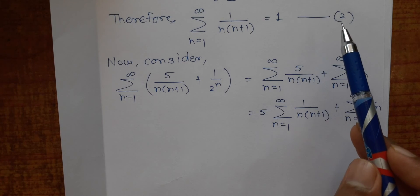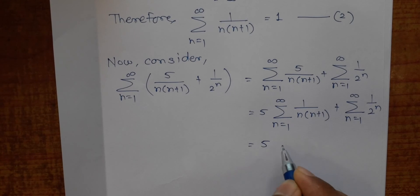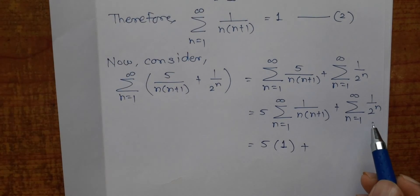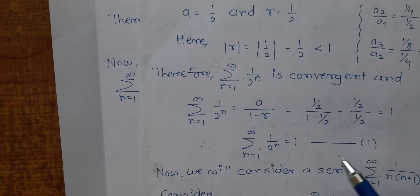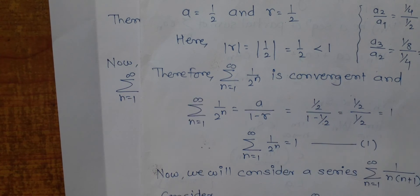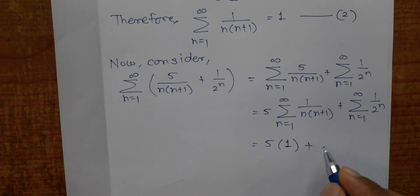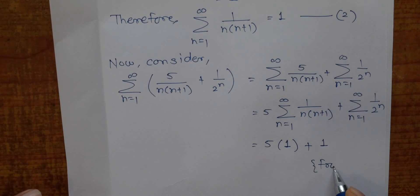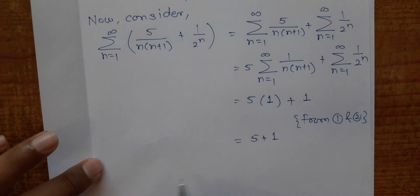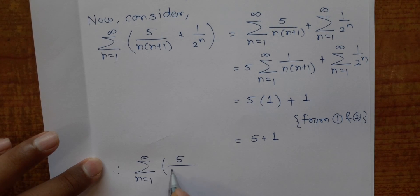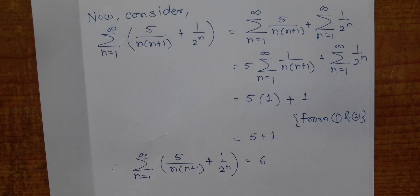Using equation 2, ∑ 1/(n(n+1)) = 1, and using equation 1, ∑ 1/2^n = 1. So the total is 5×1 + 1 = 6. Therefore, ∑(n=1 to ∞) [5/(n(n+1)) + 1/2^n] = 6. This completes the problem.